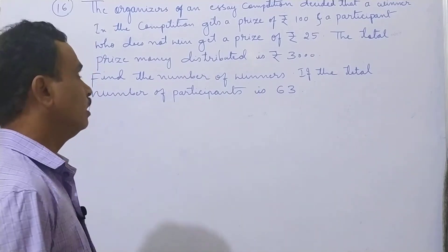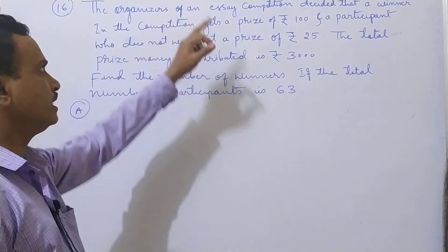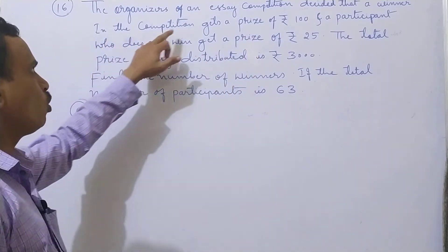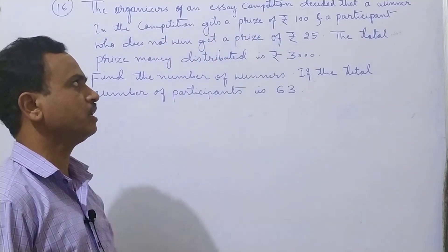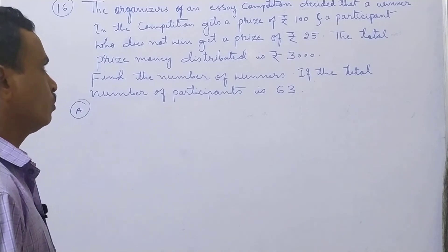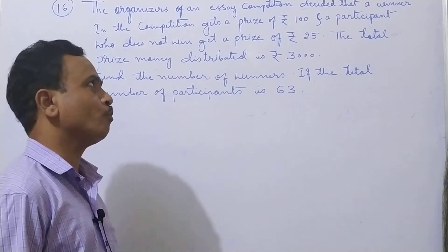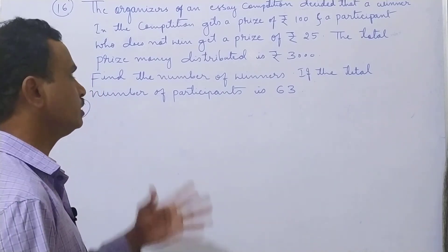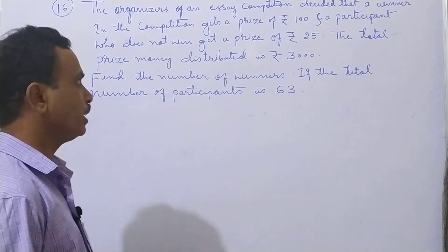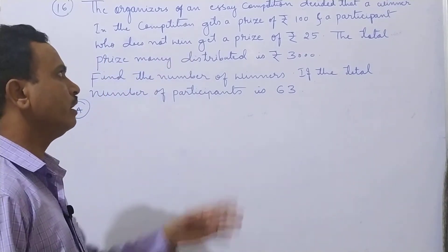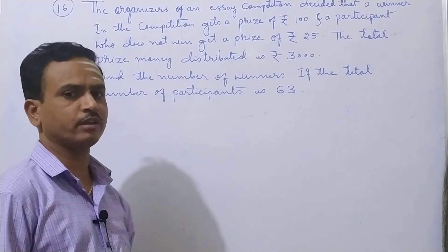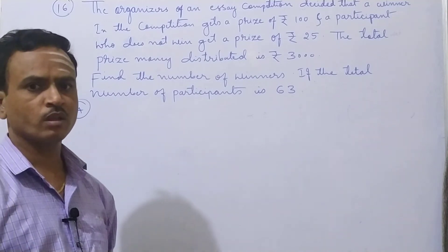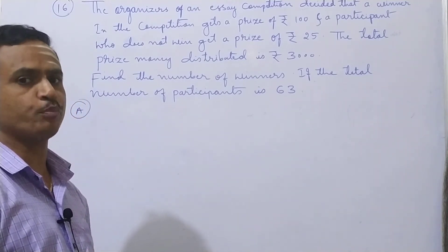Question No. 16. The organizer of an essay competition decided that a winner in the competition gets a prize of Rs 100. Those who win get Rs 100 — that is the prize. And a participant who does not win gets a prize of Rs 25. Those who did not win will also get a prize, that is Rs 25.